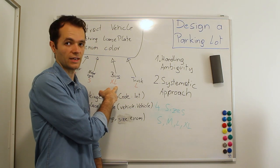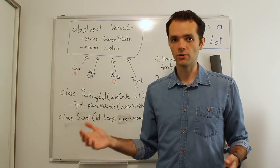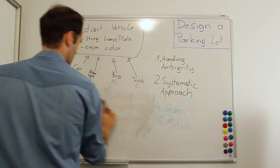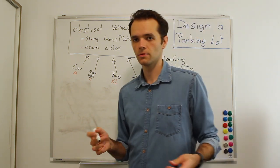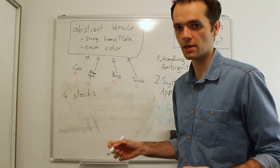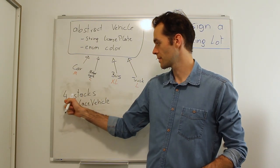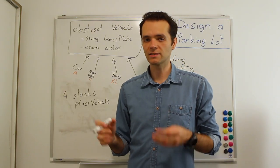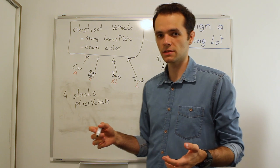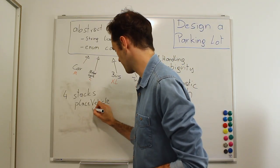We check one or two stacks, and if both don't contain any spots, we return an exception telling the customer there are no available spots. So we need four stacks — one per size — and place vehicle itself becomes a constant time operation. As long as there is at least one element in the stack for each size, this is O(1) because we have only four sizes. The worst case is four lookups to find a single free spot.